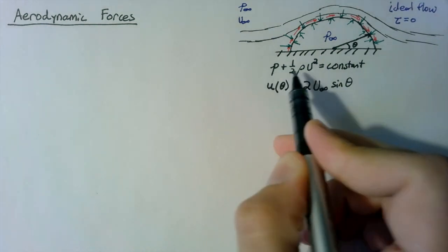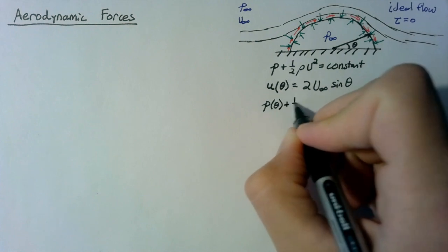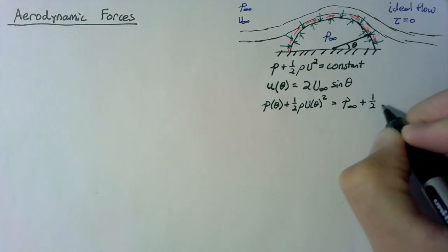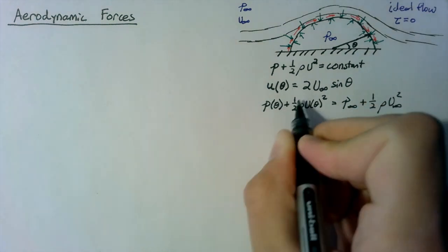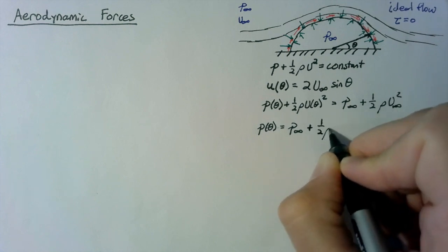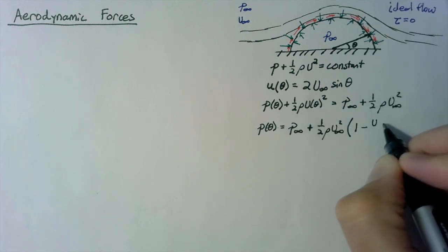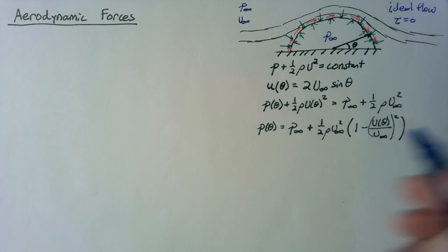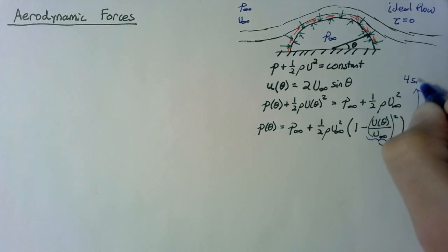We write Bernoulli's equation for a given theta value and for the infinity case: p(θ) plus one-half rho U(θ)² equals p∞ plus one-half rho U∞². Solving for p(θ), we get p(θ) equals p∞ plus one-half rho U∞² times the quantity 1 minus (U(θ)/U∞)². Since U(θ)/U∞ equals 2 sin θ, this piece is just 4 sin²θ.